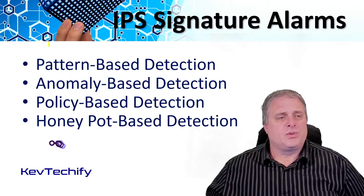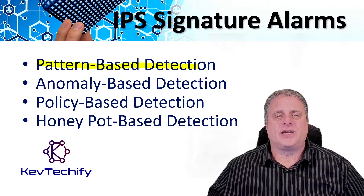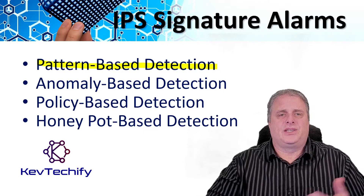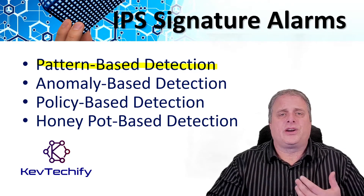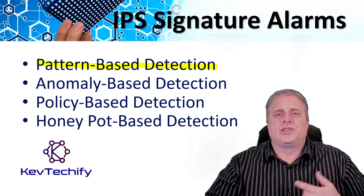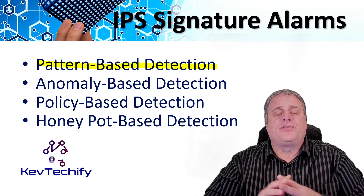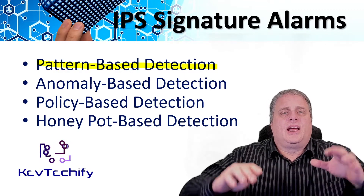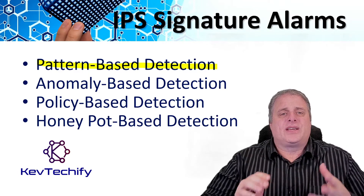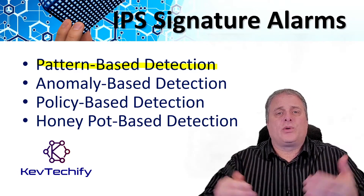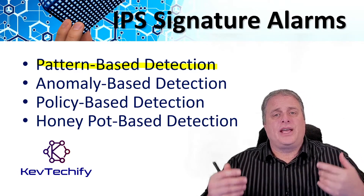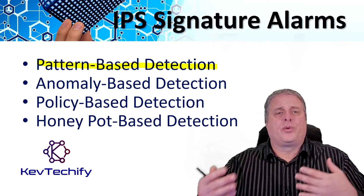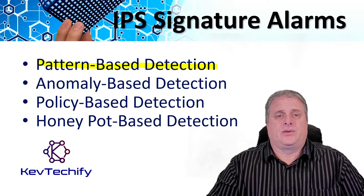The first is pattern-based detection, also known as signature-based detection. It's the simplest triggering mechanism as it searches for a specific and predefined atomic or composite pattern. An IPS sensor compares network traffic to a database of known attacks and triggers an alarm or prevents communication if a match is found.